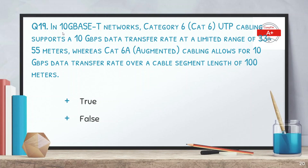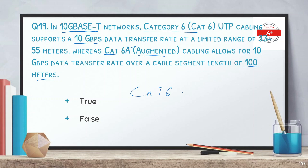Question 19: in 10 Gbps networks, Cat 6 UTP cabling supports a 10 Gbps data transfer rate at a limited range of 33 to 55 meters, whereas Cat 6a (augmented) allows for a 10 Gbps data transfer rate over a cable segment of 100 meters. We must select whether this is true or false. The answer is true — Cat 6 supports up to 33–55 meters, while Cat 6a supports up to 100 meters, both at 10 Gbps.